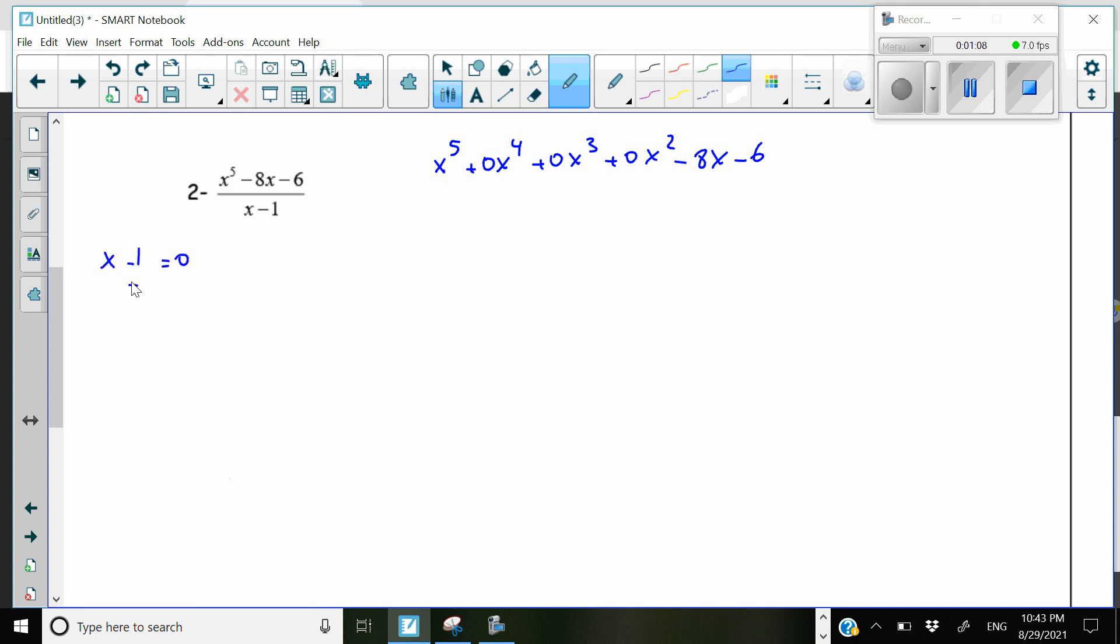So I'm going to add 1 to both sides, and from here x will be equal to 1. So this is my corner number. I'm going to write that here. This is the corner number.